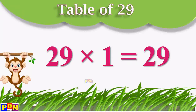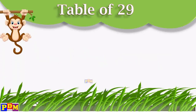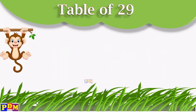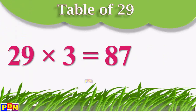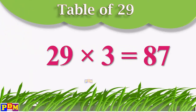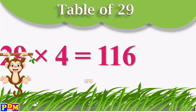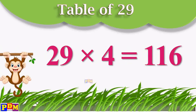29 ones are 29. 29 twos are 58. 29 threes are 87. 29 fours are 116.